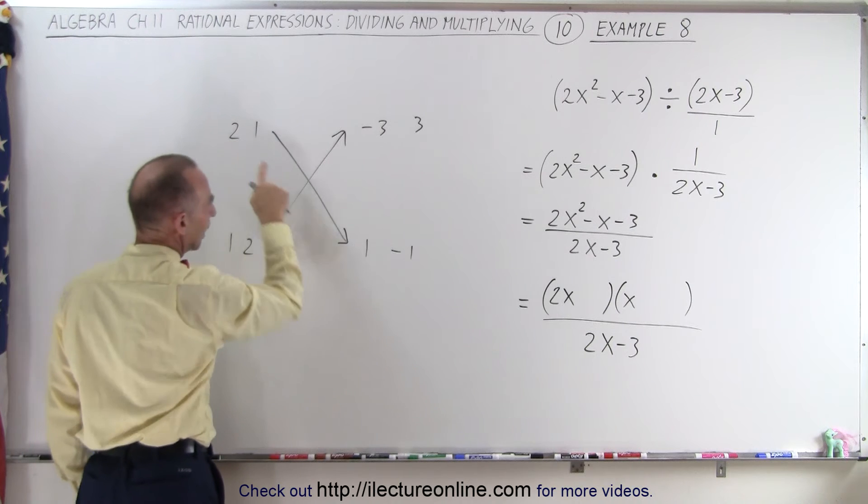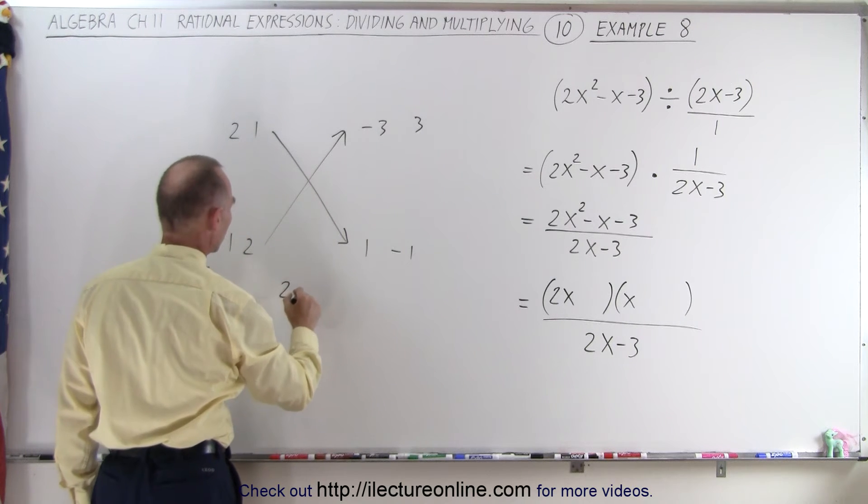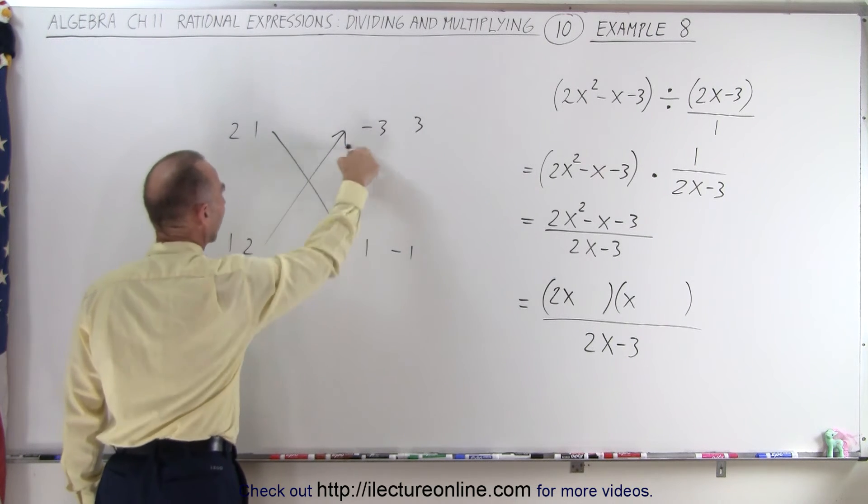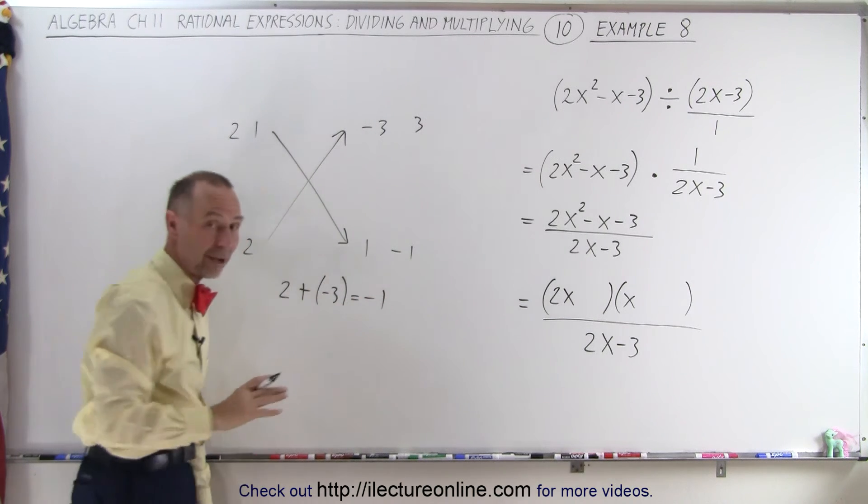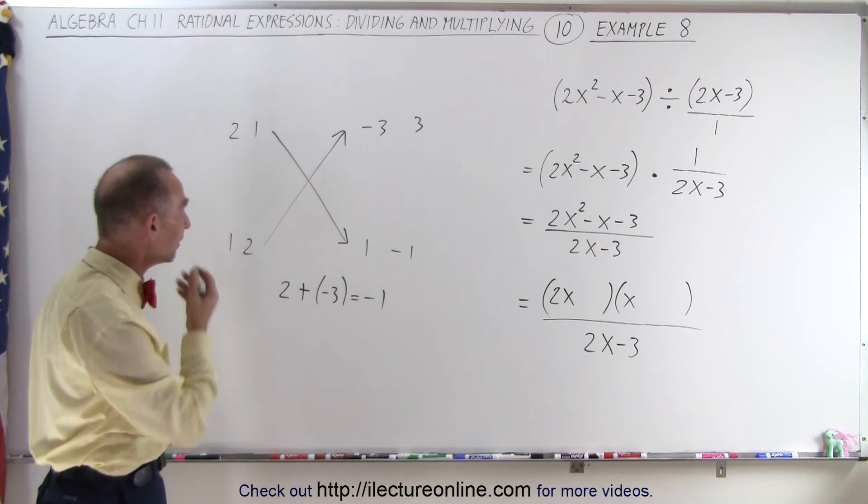So we're going to multiply the 2 times the 1. That's 2 plus the 1 times the negative 3, which is a negative 3, which on the first try we get the right result. It's a negative 1.